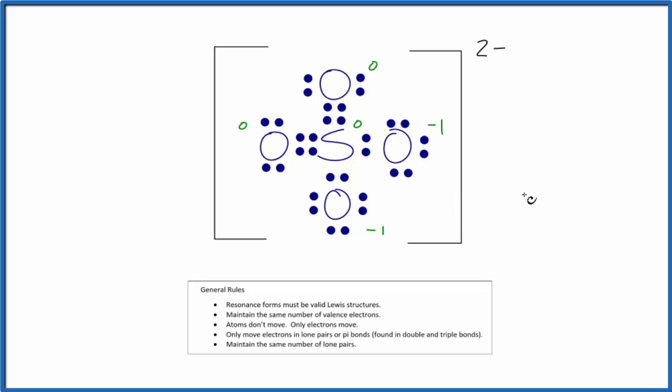The other two structures are resonance structures, but they really don't contribute to the overall structure of the SO4²⁻ ion. So we have a valid Lewis structure. We've maintained the same number of valence electrons and we didn't move any atoms. So this is the most likely or favorable Lewis structure for the sulfate ion.